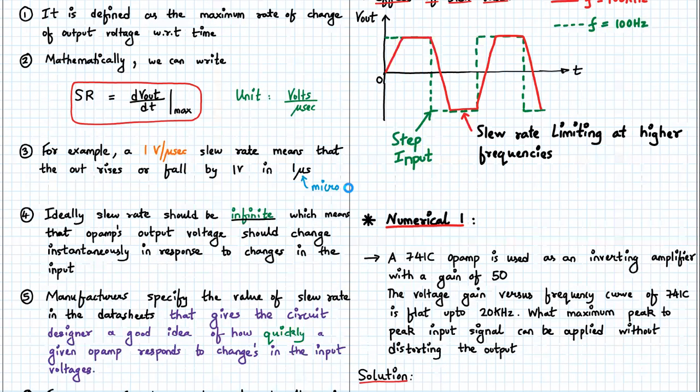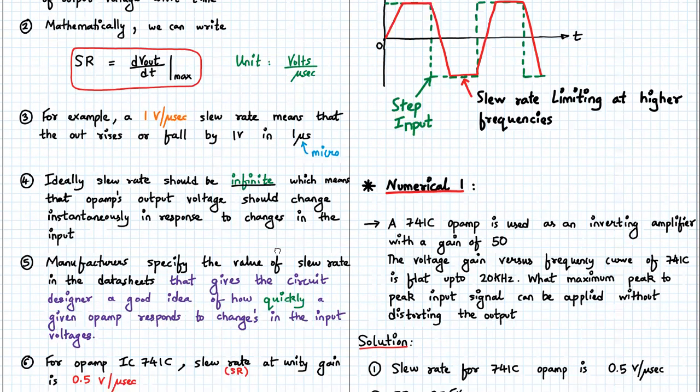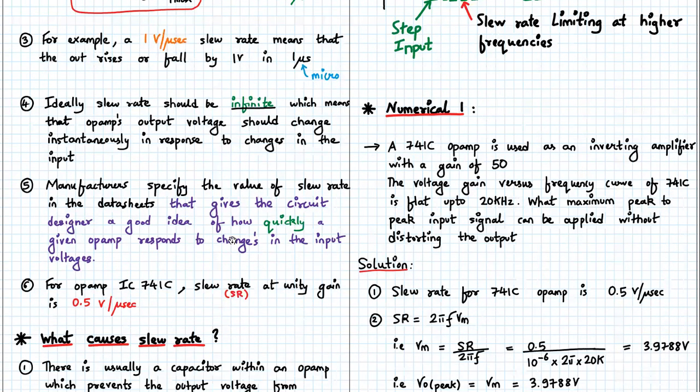And ideally the value of the slew rate is infinite. That means that the output voltage should respond or change instantaneously to changes in the input. That is what you mean by ideal slew rate. Basically it decides the speed of the op-amp. Now manufacturers specify the value of slew rate in the data sheet that gives the circuit designer a good idea of how quickly a given op-amp responds to changes in the input voltage.